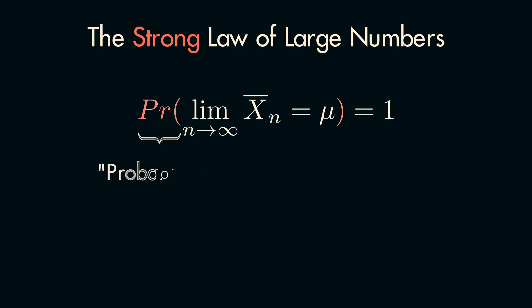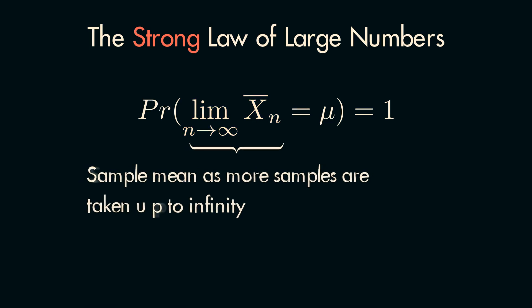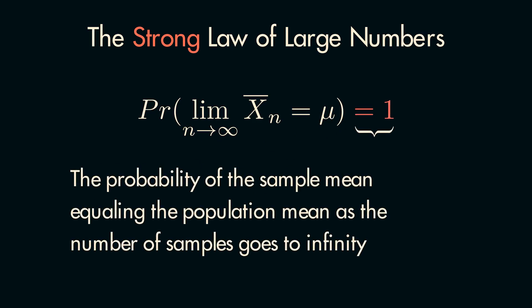Breaking this down, we see the probability notation again. The limit on the left side of the equation refers to the sample mean, as an infinite number of samples are taken. On the right side of the inner equation, the mu symbol represents the population mean. So altogether, the statement is saying that the probability of the sample mean when the number of samples goes to infinity, equaling the population mean, is equal to 1.